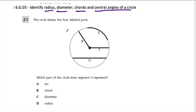Here in this first question, the circle below has four labeled parts. Which part of the circle does segment U represent? Well, segment U is down here. And if you notice, this line is not a radius. R and T are radiuses, or radii. A radius is a line that connects from the edge of the circle across to the center of the circle, and that's what R and T are. So the radius is out.